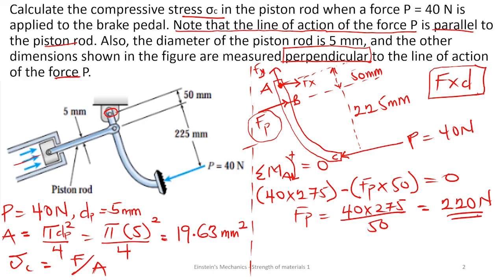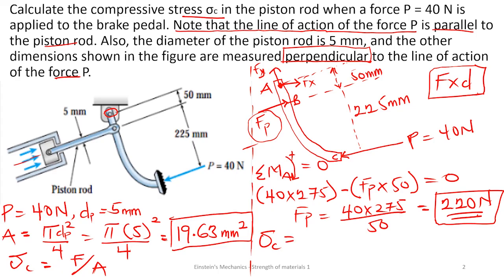So this is the force in the piston. We have the area of the piston and the force in the piston. Therefore, the compressive stress in the piston is the force divided by the area: 220 divided by 19.63. We are working in millimeters, and that gives us a value of 11.21 Newton per millimeter squared.